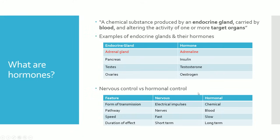The definition of hormones given by the syllabus is: a chemical substance produced by an endocrine gland, carried by blood, and then altering the activity of one or more target organs.